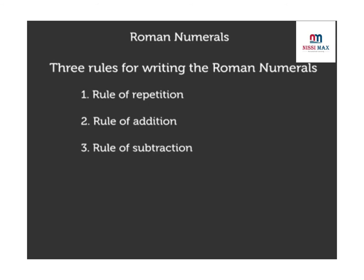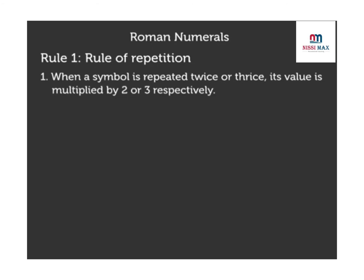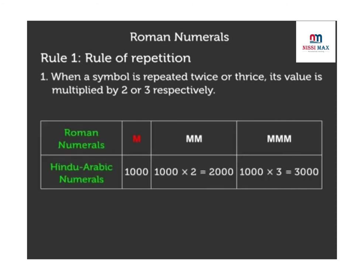Rule 1: Rule of repetition. When a symbol is repeated twice or thrice, its value is multiplied by two or three respectively. For example, M is equal to 1000, MM is equal to 1000 times 2 is equal to 2000, MMM is equal to 1000 times 3 is equal to 3000.